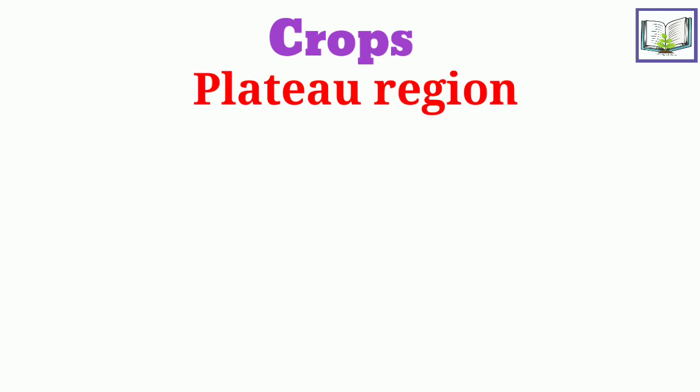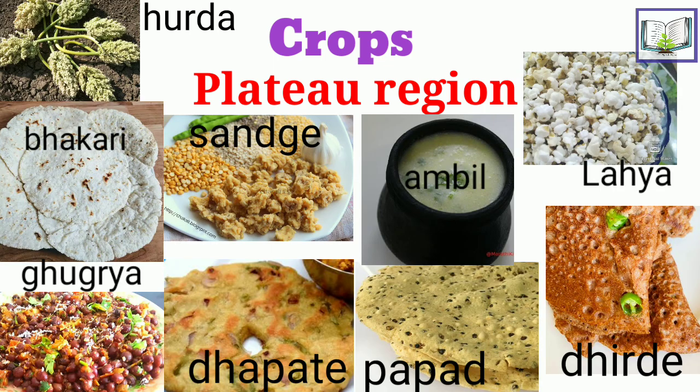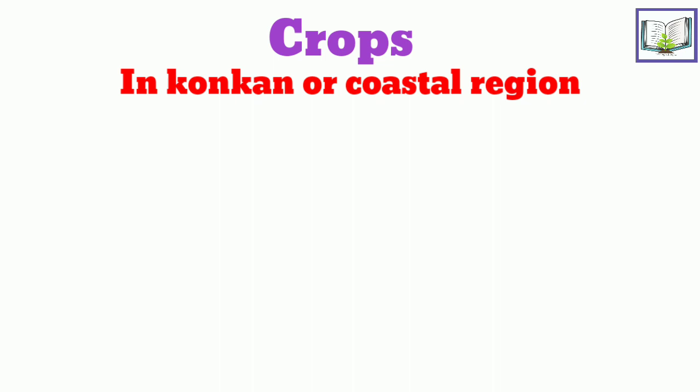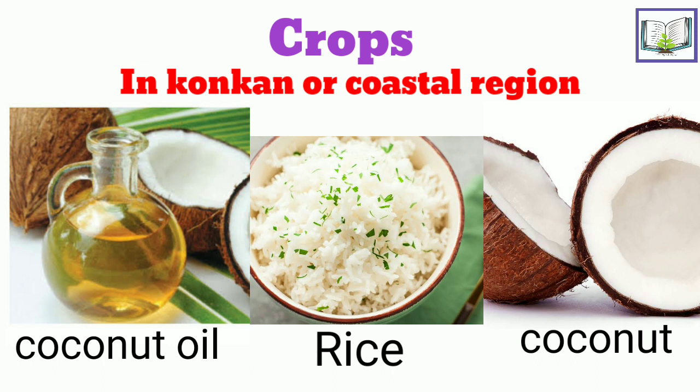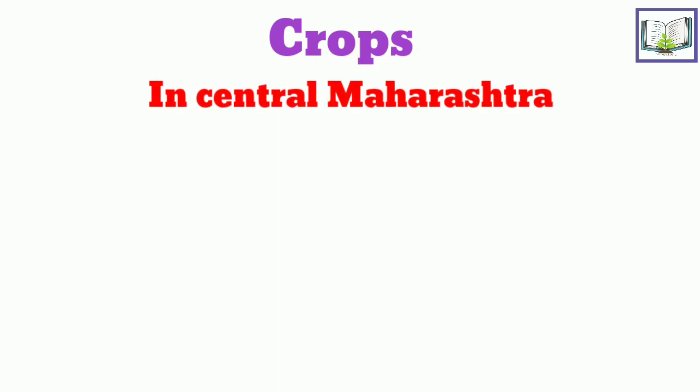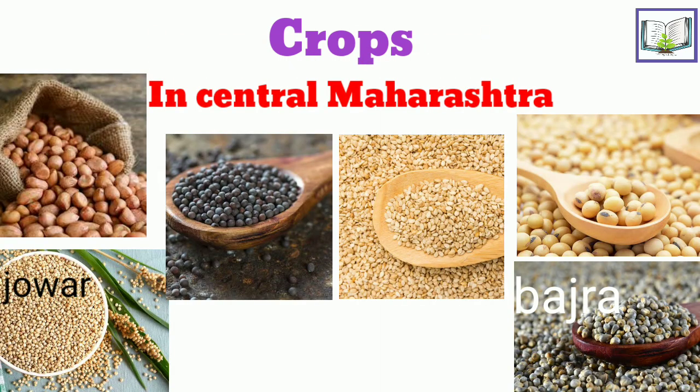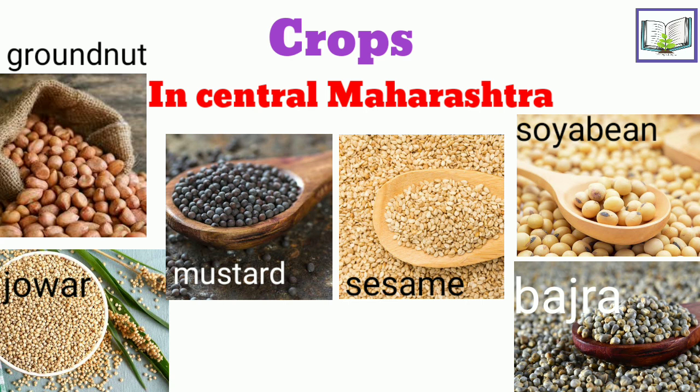Now let's see about crops and find out the main crops in particular regions. The plateau region of Maharashtra has many preparations from jawar: hurda, laya, bhakri, gugriya, papad, sandge, ambil, dhapate, and dirde. In the Konkan or coastal region, crops like rice, coconut, and coconut oil are widely used. In Central Maharashtra, crops like jawar, bajra, groundnut, soyabean, sesame, and mustard are more commonly used.